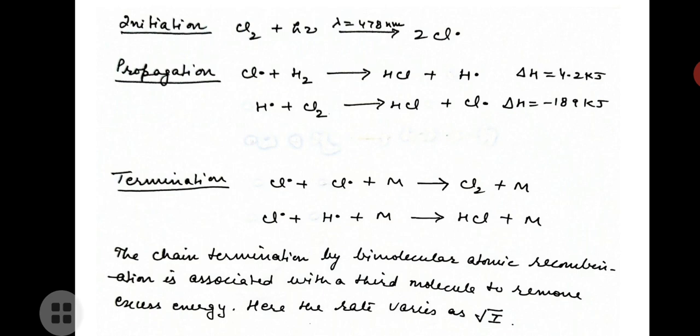In the chain propagation step, the chlorine free radical takes one hydrogen from H₂ gas and forms HCl and a hydrogen free radical. In the next step, the hydrogen free radical reacts with a chlorine molecule and forms HCl and a chlorine free radical.